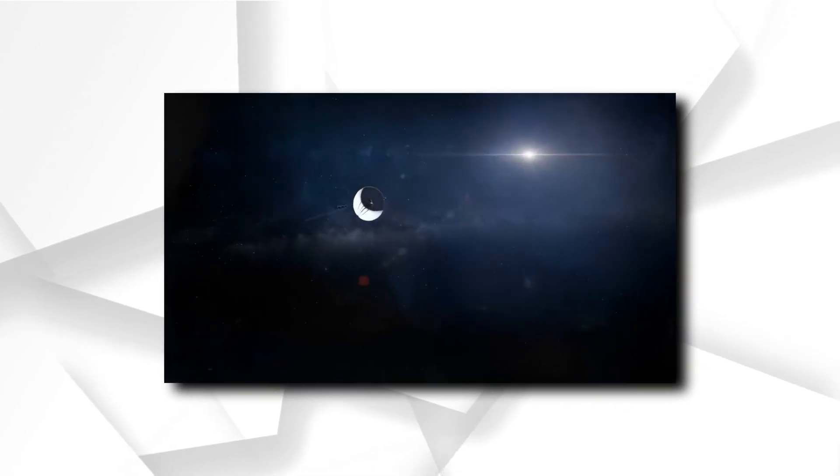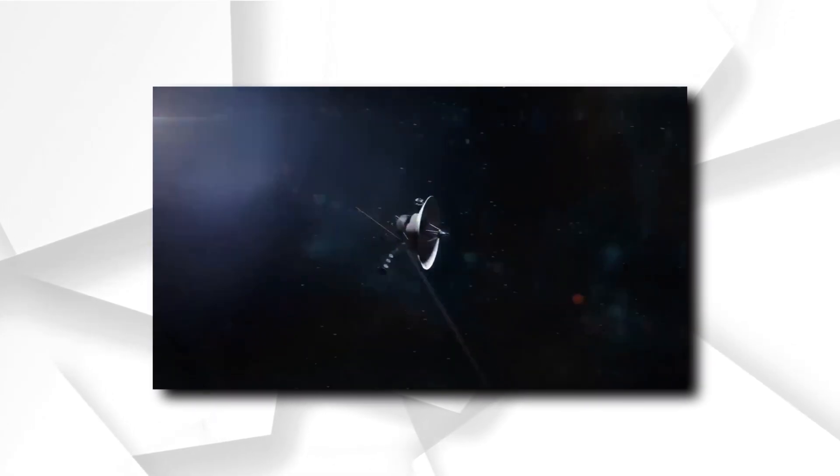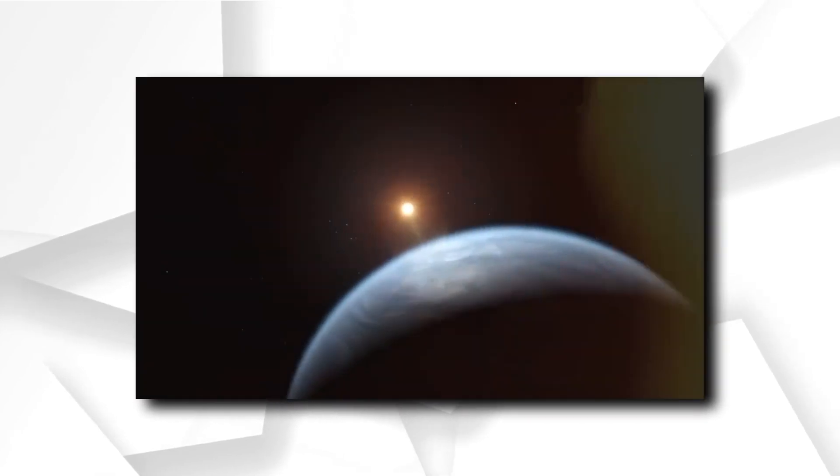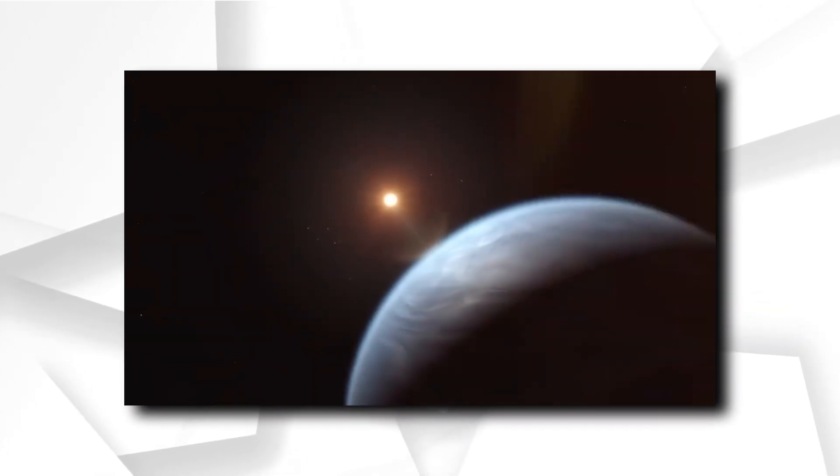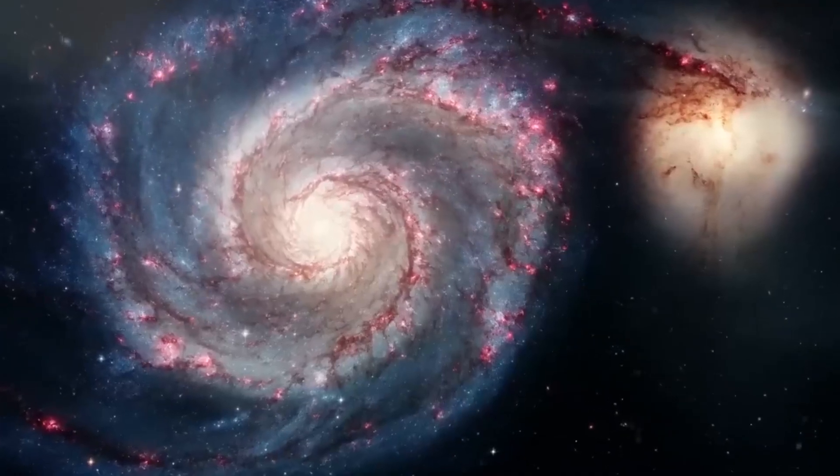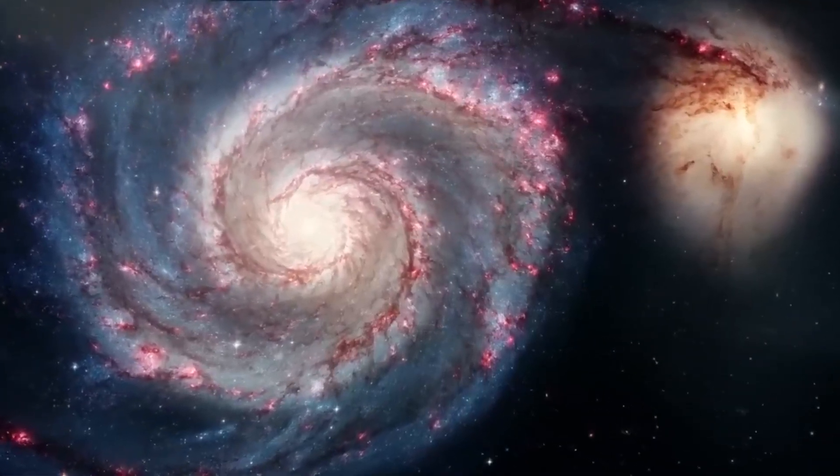It was launched as part of the Voyager program 16 days before its twin Voyager 1 on a course that took longer to reach the gas giants Jupiter and Saturn, but allowed for more contacts with the ice giants Uranus and Neptune.